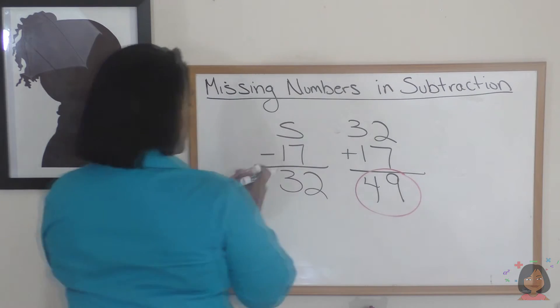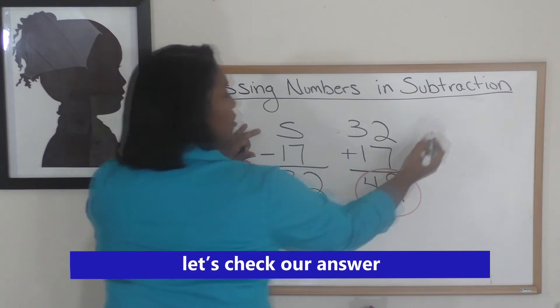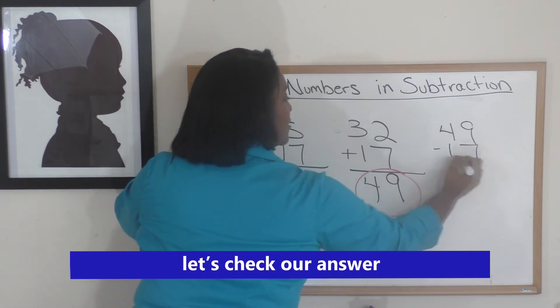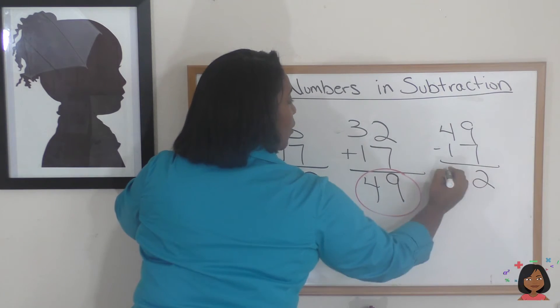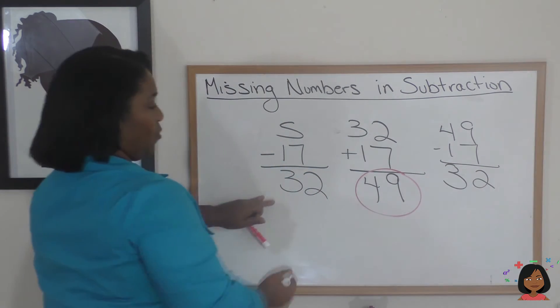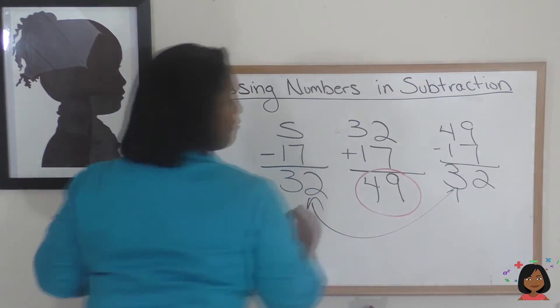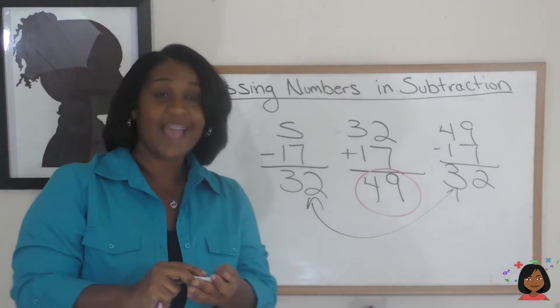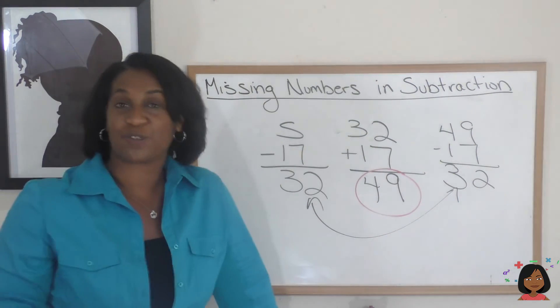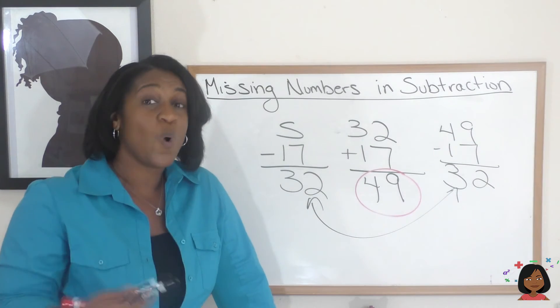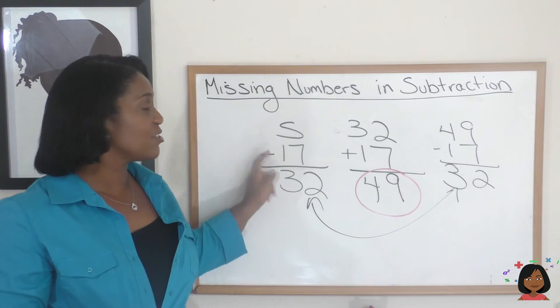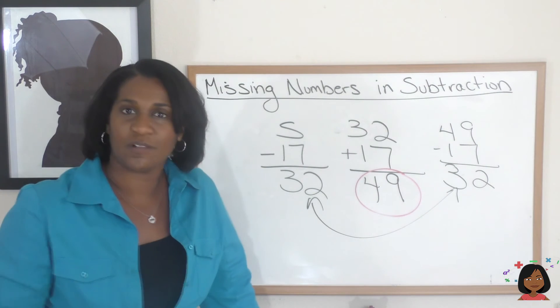But let's go ahead and check it. We're going to do 49 minus 17, and we're going to get 32. Look at that. It means it's the correct answer. So, again, finding missing numbers in subtraction. You can either use subtraction or addition. It just depends on which one of these numbers we're looking for.